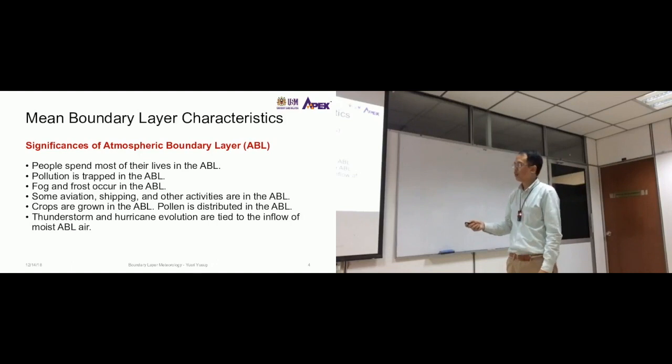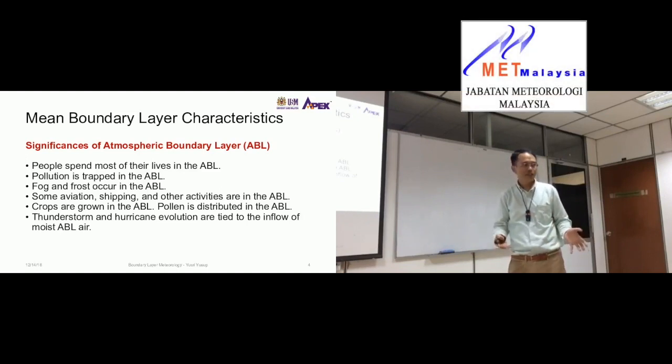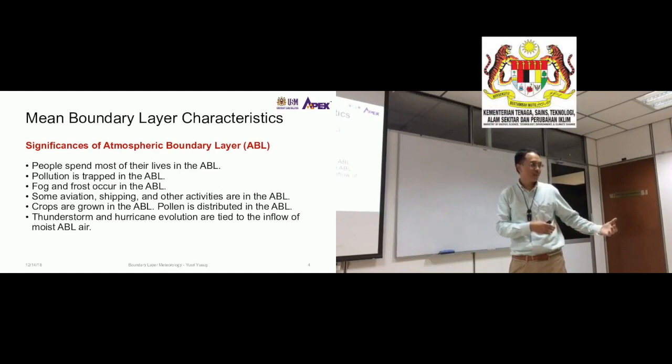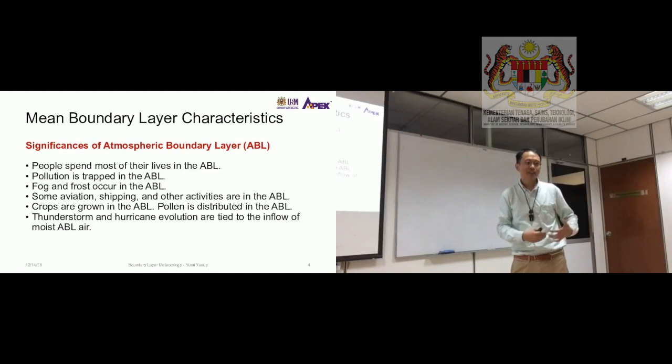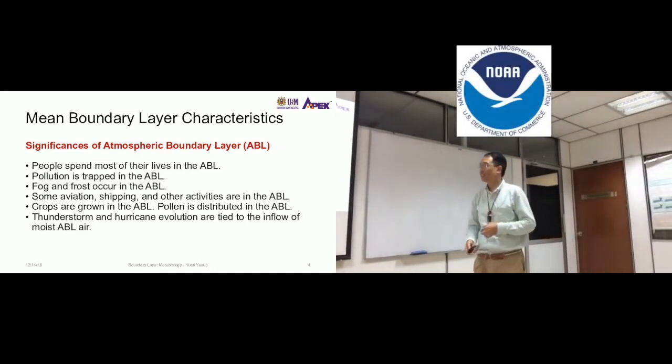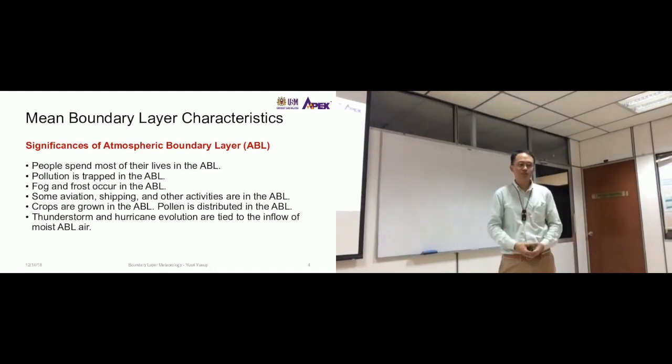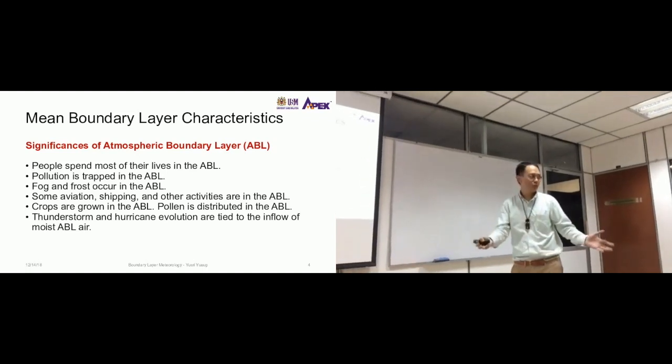Notice that these two are related to the economy: logistics and agriculture. A fun fact is that the meteorological department in Malaysia is under the science and technology ministry, but in the U.S., the meteorology department is under the economy ministry. This shows how tightly linked meteorology is with the economy. Pollen is distributed in ABL. Pollen can be considered as a pollutant as well, and you can use the same air quality model to model the dispersion of pollen in the atmosphere.